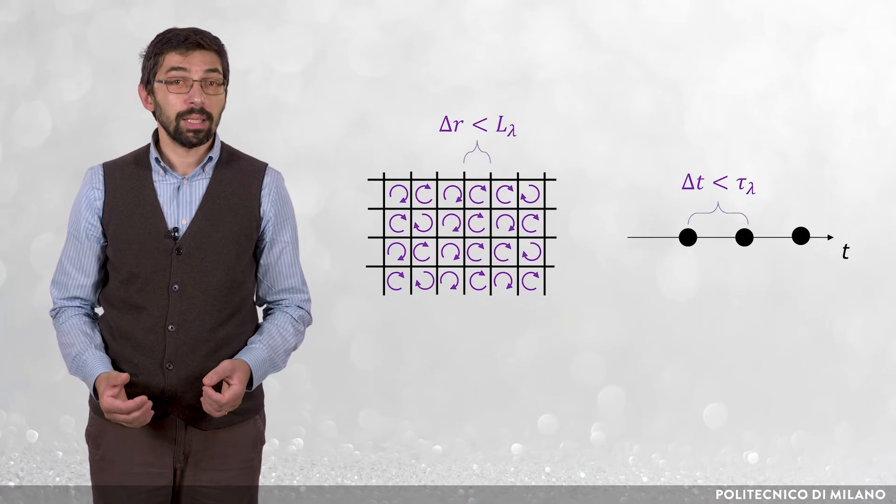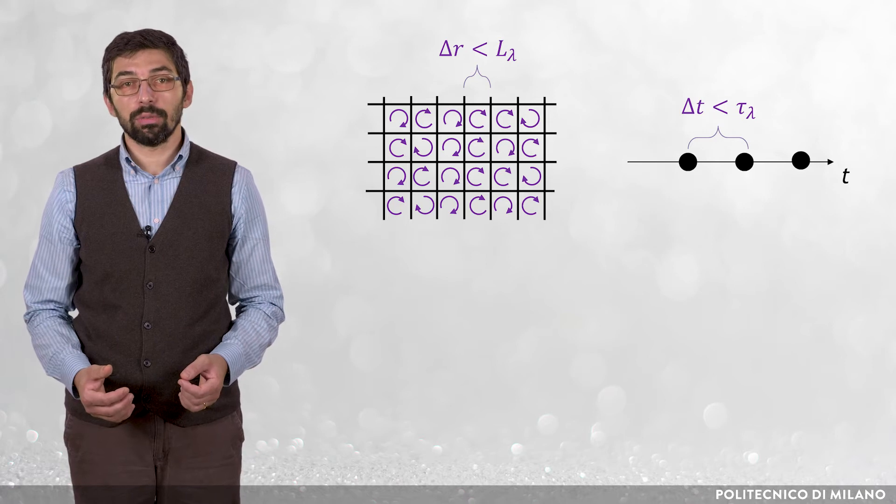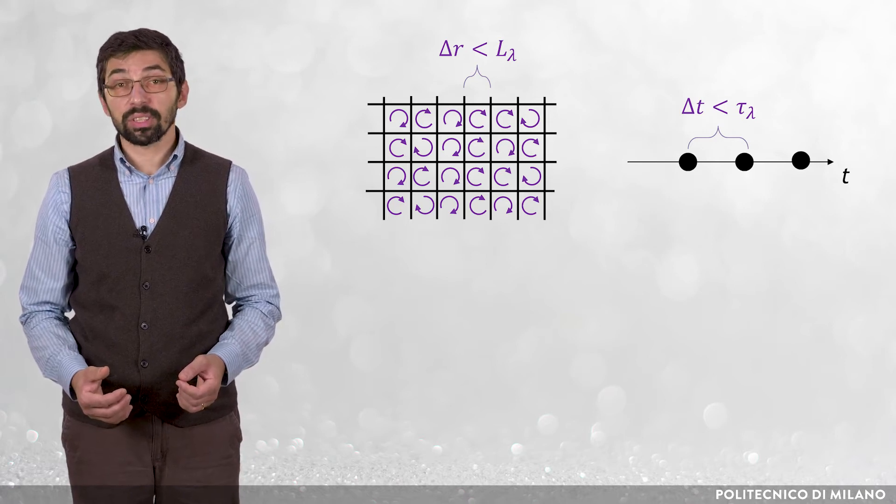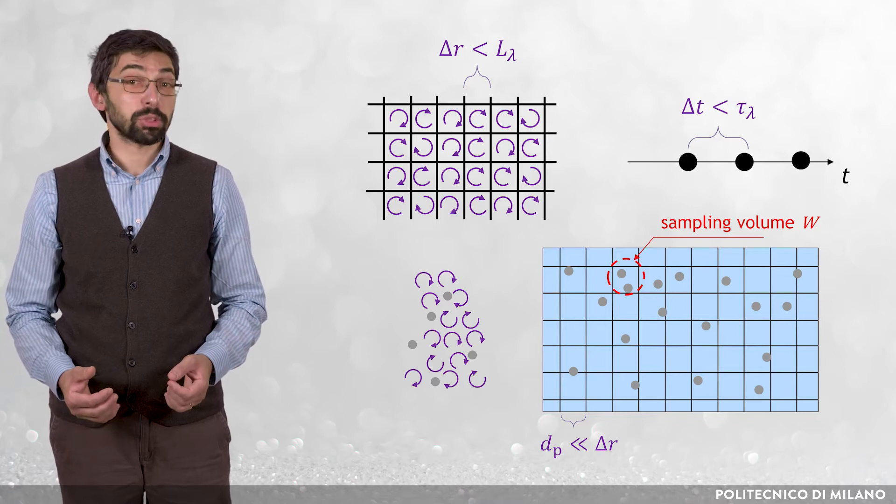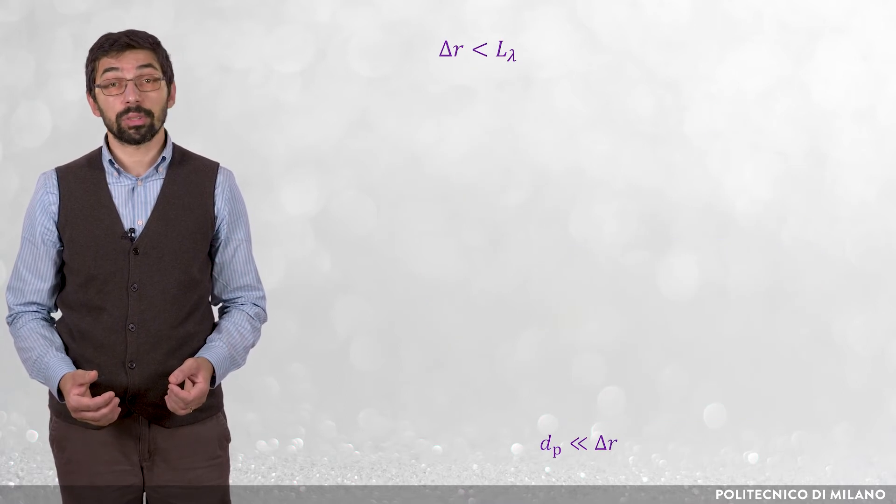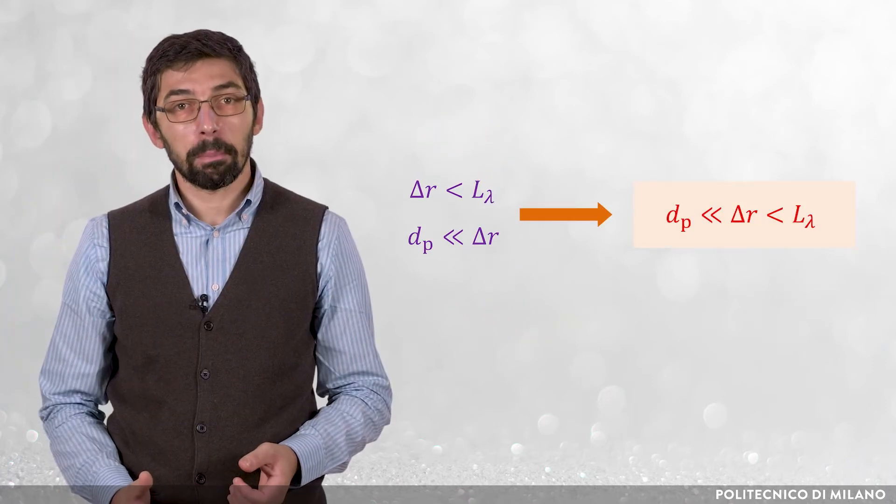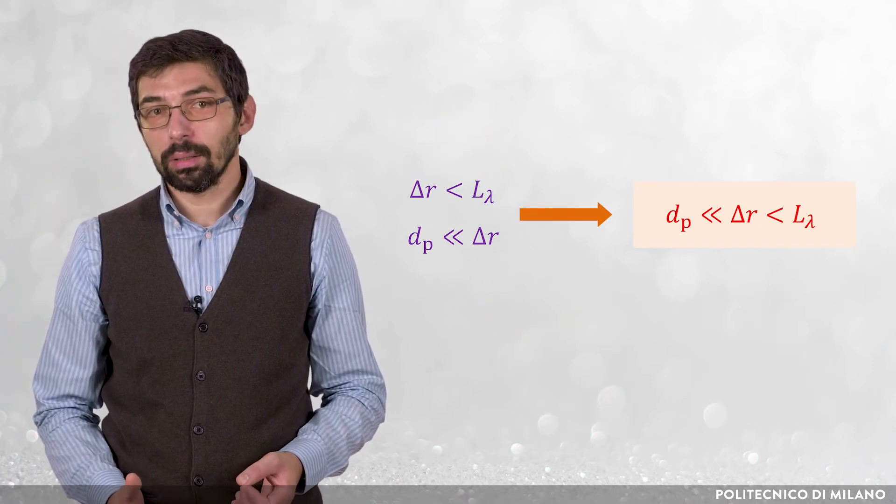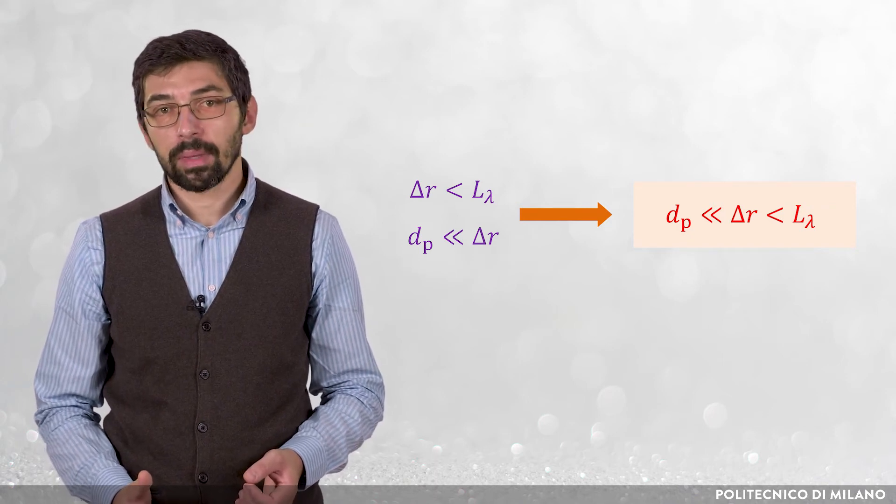Apart from that, since the Eulerian-Eulerian equations arise from the average over sampling volume, it seems reasonable to impose the particle size d_p to be much smaller than the size of the computational cells delta r. In summary, d_p must be smaller than delta r, which in turn must be smaller than L small lambda.